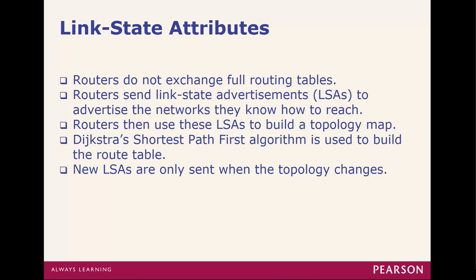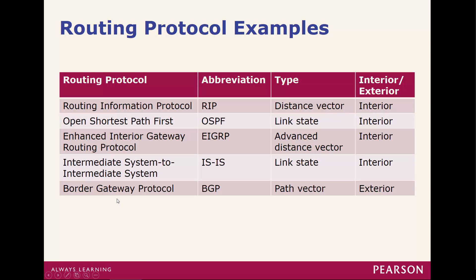Examples: RIP, Routing Information Protocol, is distance vector. OSPF, Open Shortest Path First, is link state. EIGRP is a more advanced distance vector. IS-IS is link state. BGP is a path vector, mainly used for exterior access. Remember: distance vector sends the full map, while link state only sends changes that were made.